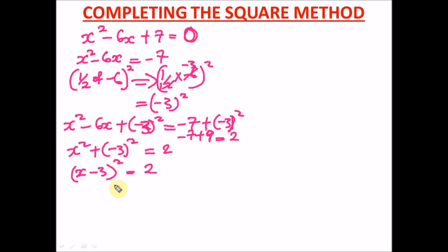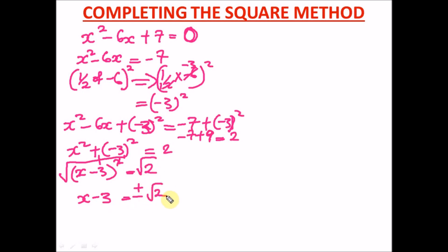Our final step — step 5 — is to square root both sides. The square root cancels the square on the left, leaving us with x minus 3. On the right we get plus or minus root 2. Taking minus 3 to the right-hand side, it becomes positive: x equals 3 plus or minus root 2.